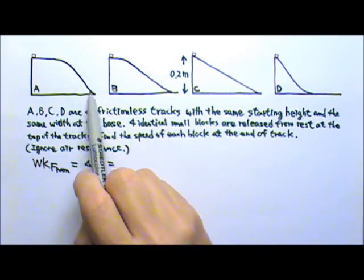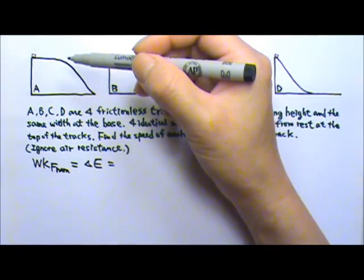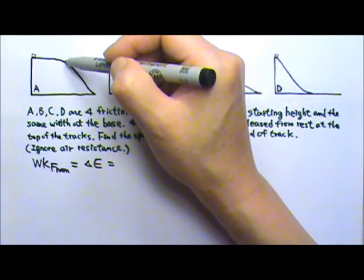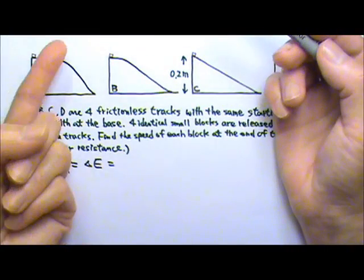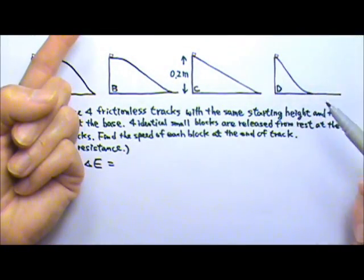When the block slides down the frictionless track, there are only two forces acting on the block. When the block is over here, there will be Mg going straight down and the normal force perpendicular to the surface of the track.